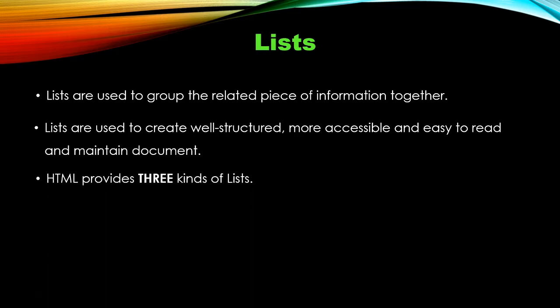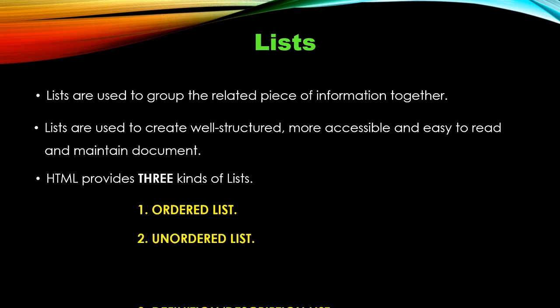In HTML there are three kinds of lists. The first one is the ordered list, the second one is the unordered list, and the third one is the definition list — we can also call it the description list. One by one sequentially we will cover all three kinds of lists provided by HTML.